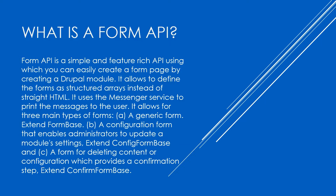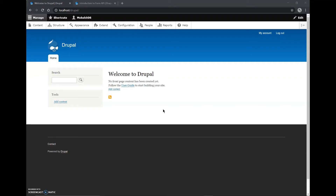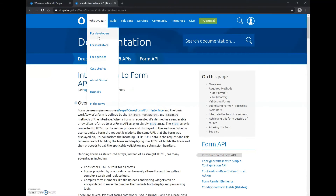The Form API provides all the features expected from an enterprise to build a form, combined with the flexibility and openness of Drupal. In this video I will be creating a basic form page which asks the user for their name, age, birth date, and gender. This is my Drupal website which is on the localhost and I will be adding a basic form to it using the Form API.